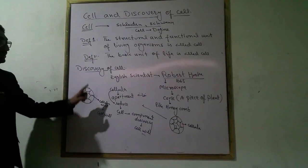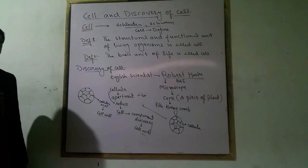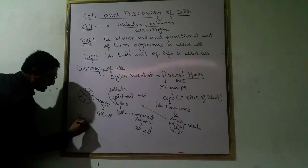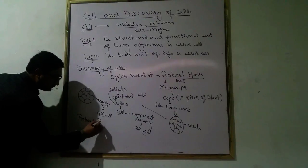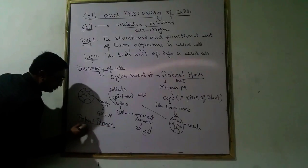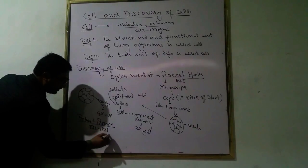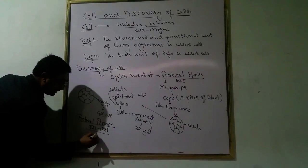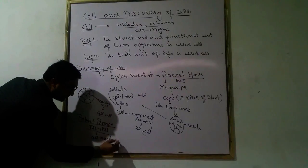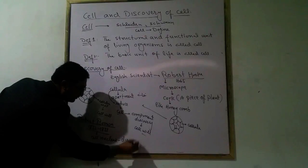The cell wall was discovered by Robert Hooke. The cell itself was discovered by Robert Hooke. Later, scientist Robert Brown, in 1832 or 1833, discovered the nucleus of the cell.